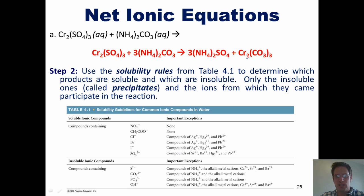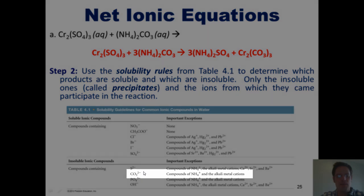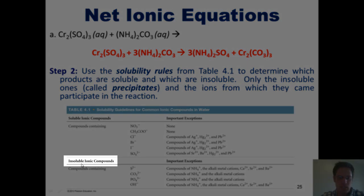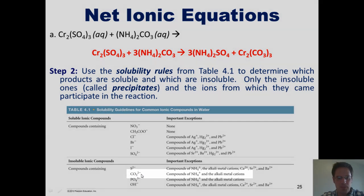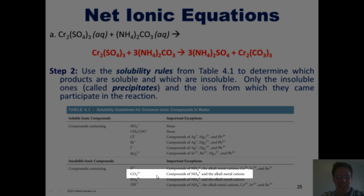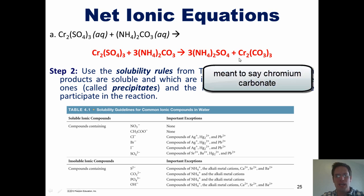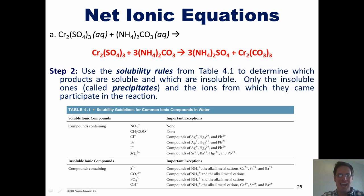Now let's look at chromium carbonate. Carbonate appears in the bottom half of the table, which means every ionic compound containing carbonate anion is insoluble in water except for ammonium carbonate and any carbonate whose cation is from group one of the periodic table. Does chromium fall into one of those categories? No, it does not. Hence, chromium carbonate is insoluble in water and will precipitate out.